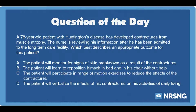Again, a 78-year-old patient with Huntington's disease has developed contractures from muscle atrophy. The nurse is reviewing his information after he has been admitted to the long-term care facility. Which best describes an appropriate outcome for this patient? A. The patient will monitor for signs of skin breakdown. B. The patient will learn to reposition himself without help. C. The patient will participate in range-of-motion exercises to reduce the effects of the contractures. D. The patient will verbalize the effects of his contractures on his activities of daily living.